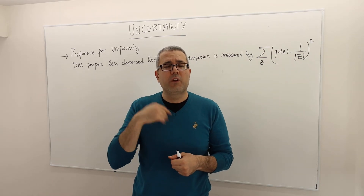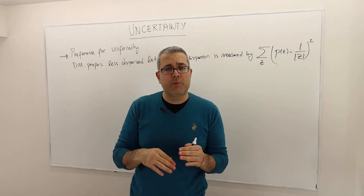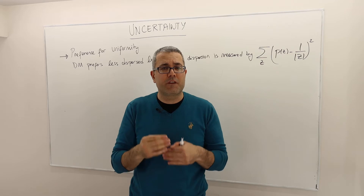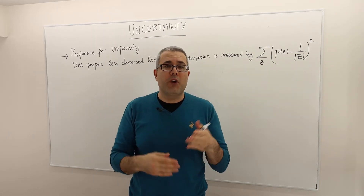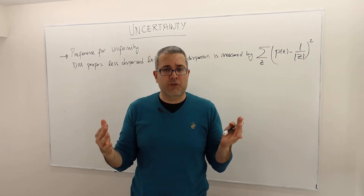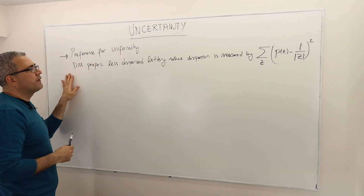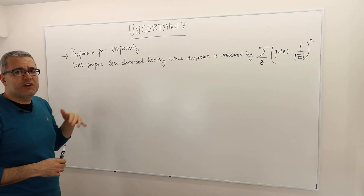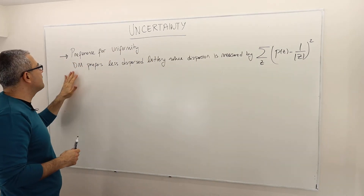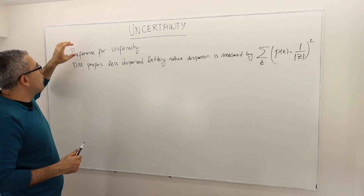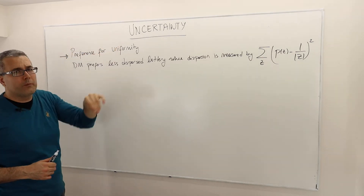Welcome back, guys. So we're going to start talking about some examples over preferences over lotteries. So here is one preference relation which is behaviorally very appealing. We call it preference for uniformity.